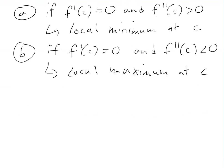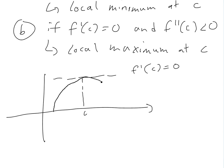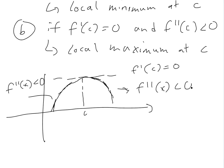Similarly, if f double prime of x is less than zero, you'd have something concave downwards. At point c, f prime of c is zero, and the slope is becoming less and less — decreasing. The slope is really high but it's leveling off, so f double prime of x is less than zero. Even on the other side, the slope is really negative and becoming more and more steep in the negative direction, so f double prime of x is still less than zero — giving you a local maximum.